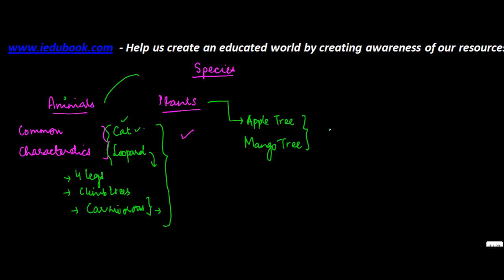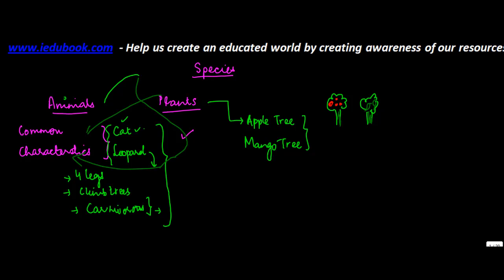For plants, let's say an apple tree or a mango tree — the size is big, they give fruits, and they are in the shape of a tree. One may have apples and the other may have mangoes, but they are both in the shape of a tree. So certain animals and certain plants show certain common characteristics.